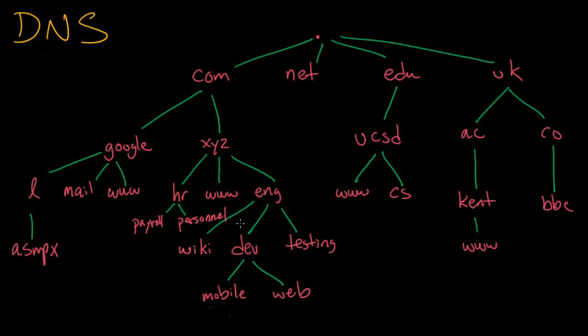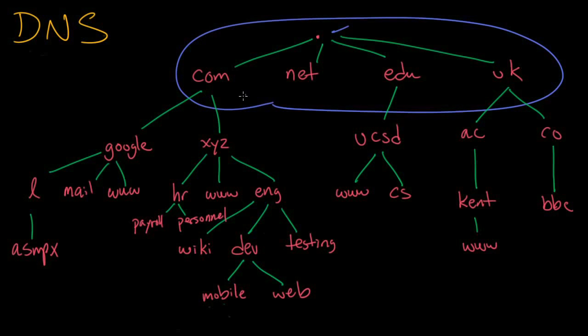But the zones are different. Up here at the top is the root zone that contains itself and all of the top level domains that you know, like com, net, edu, gov, org, and the country domains like UK, JP, US, and so forth.